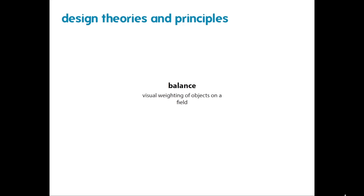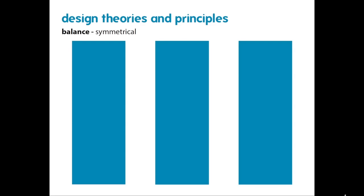The first thing we're going to talk about is balance — the visual weighting of objects on a field. The first type is symmetrical balance. Here we have three rectangles organized vertically, centered and equally spaced. It has a real sense of overall balance and order that can be very pleasing to the eye. You have to be careful — if you do it too much, it can come across as being kind of banal and boring. But it's a really good starting point to keep everything symmetrical.